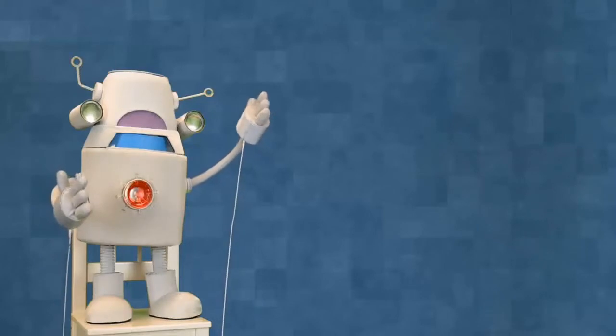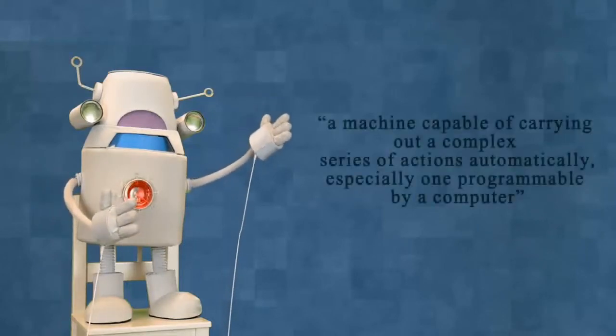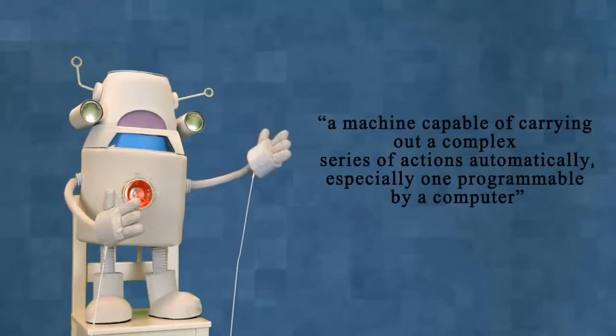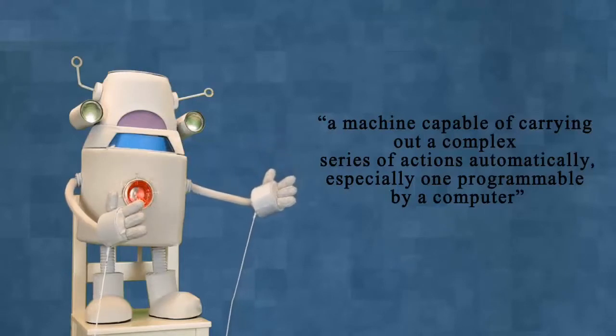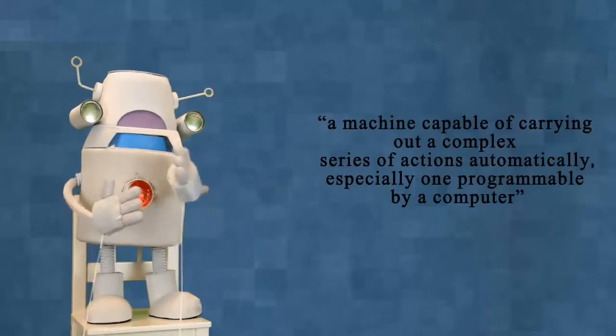According to the Oxford Dictionary, a robot is a machine capable of carrying out a complex series of actions automatically, especially one programmable by a computer.